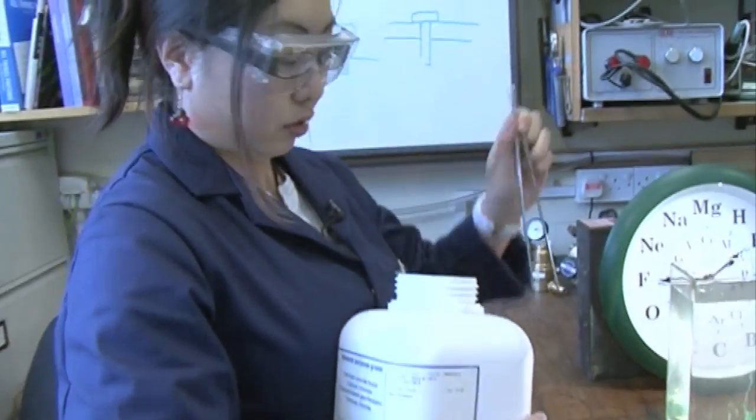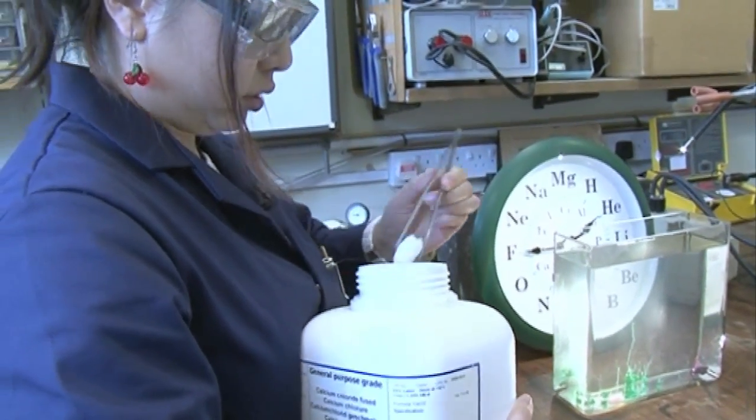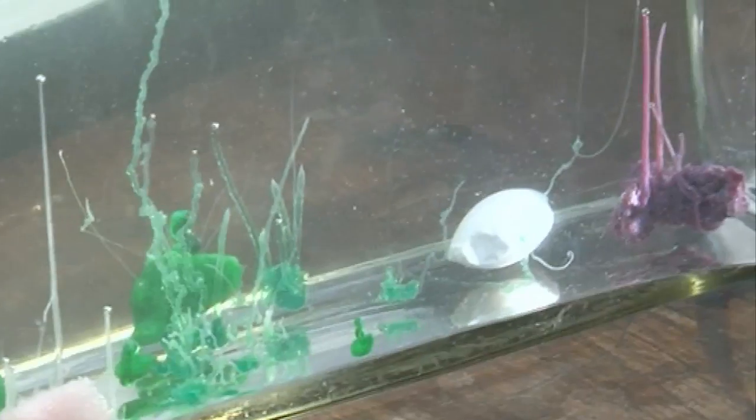The next one we do have big lumps of and this one is calcium chloride. So let's grab a chunk of that. A bit like an egg shape there. Let's put it in that bit there. See if anything happens with that.